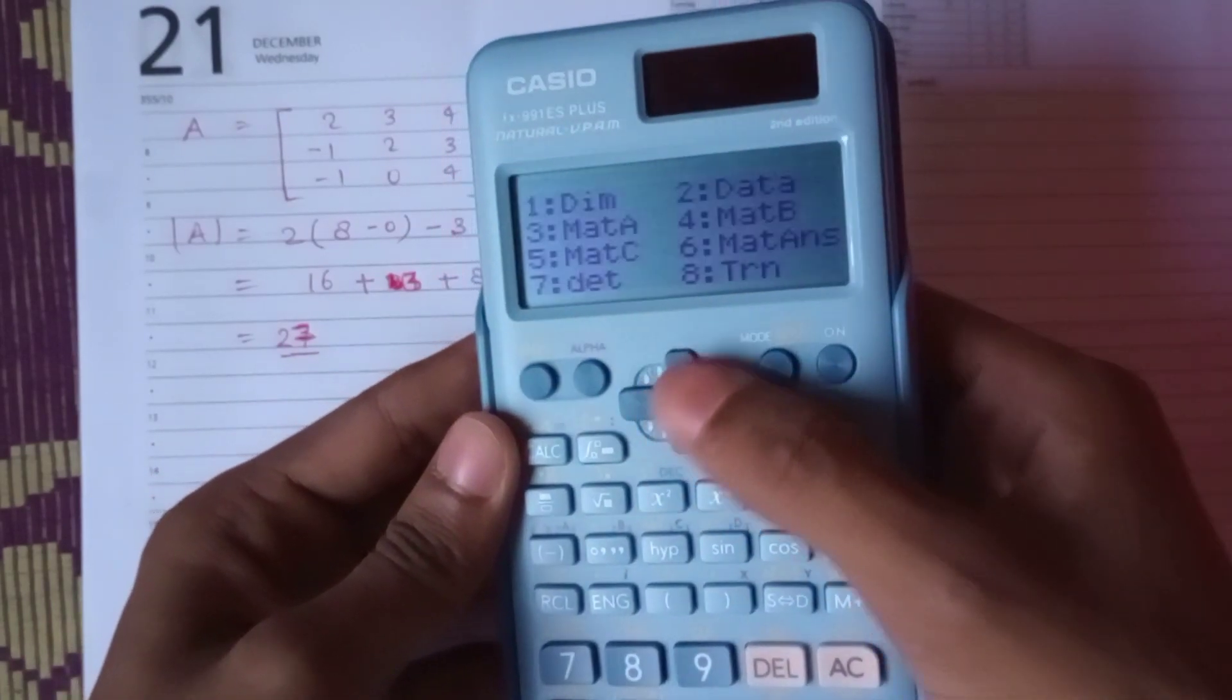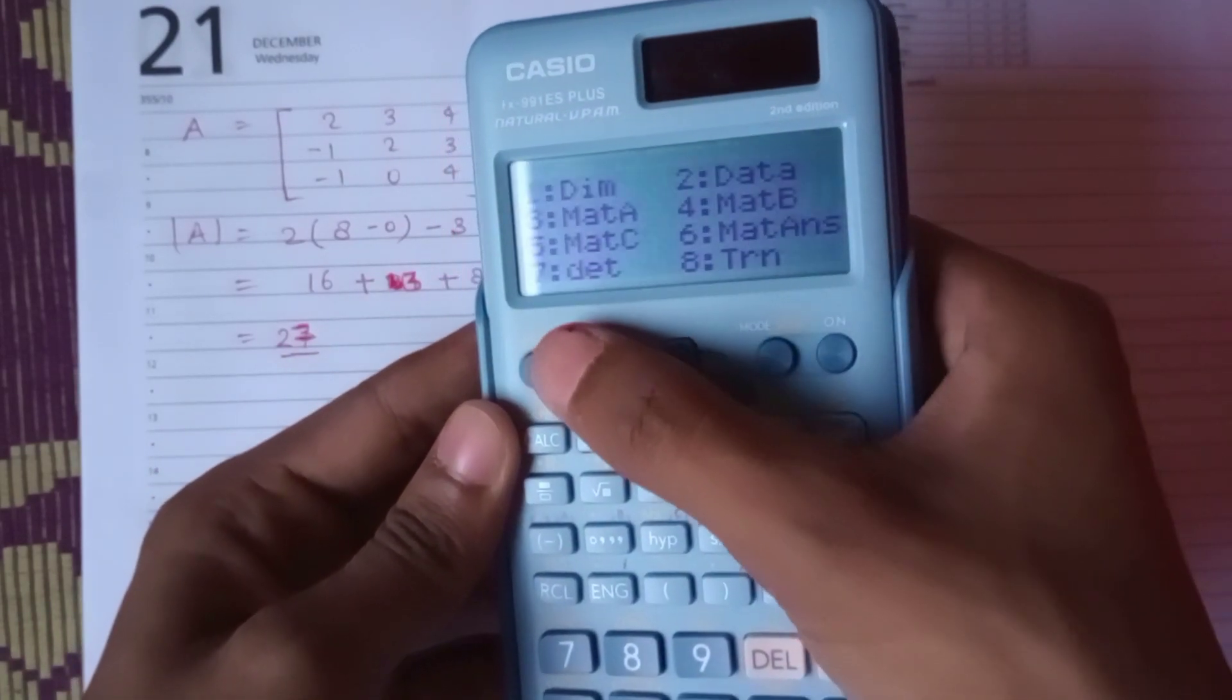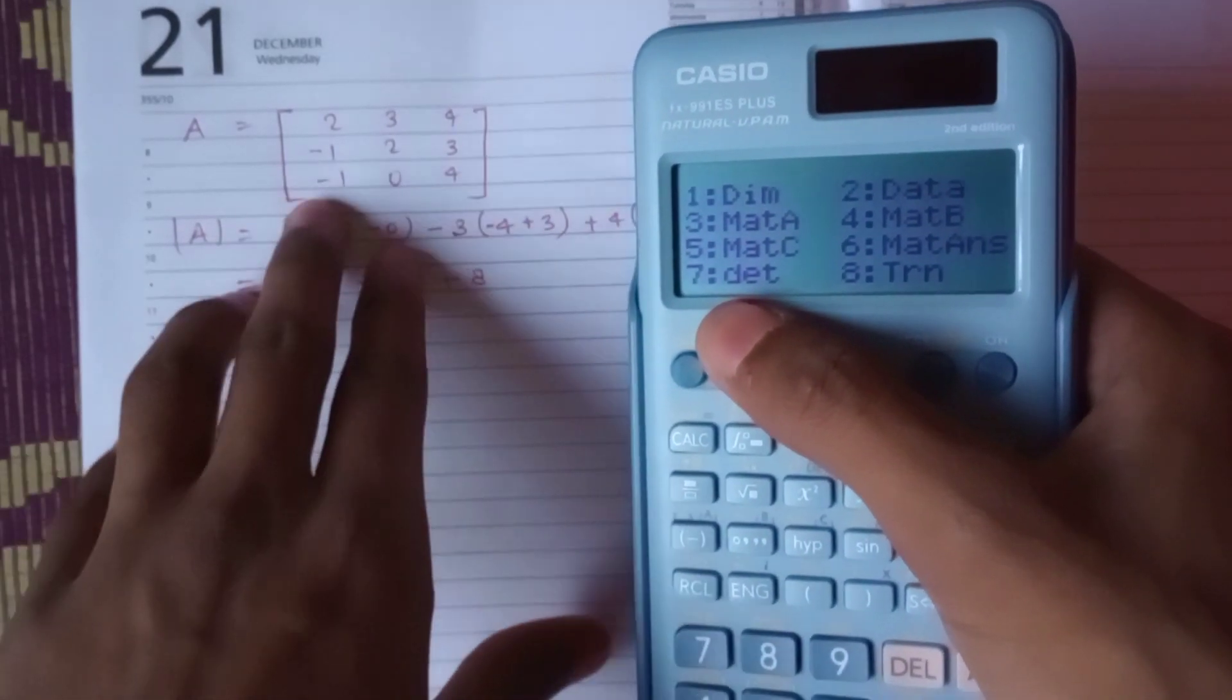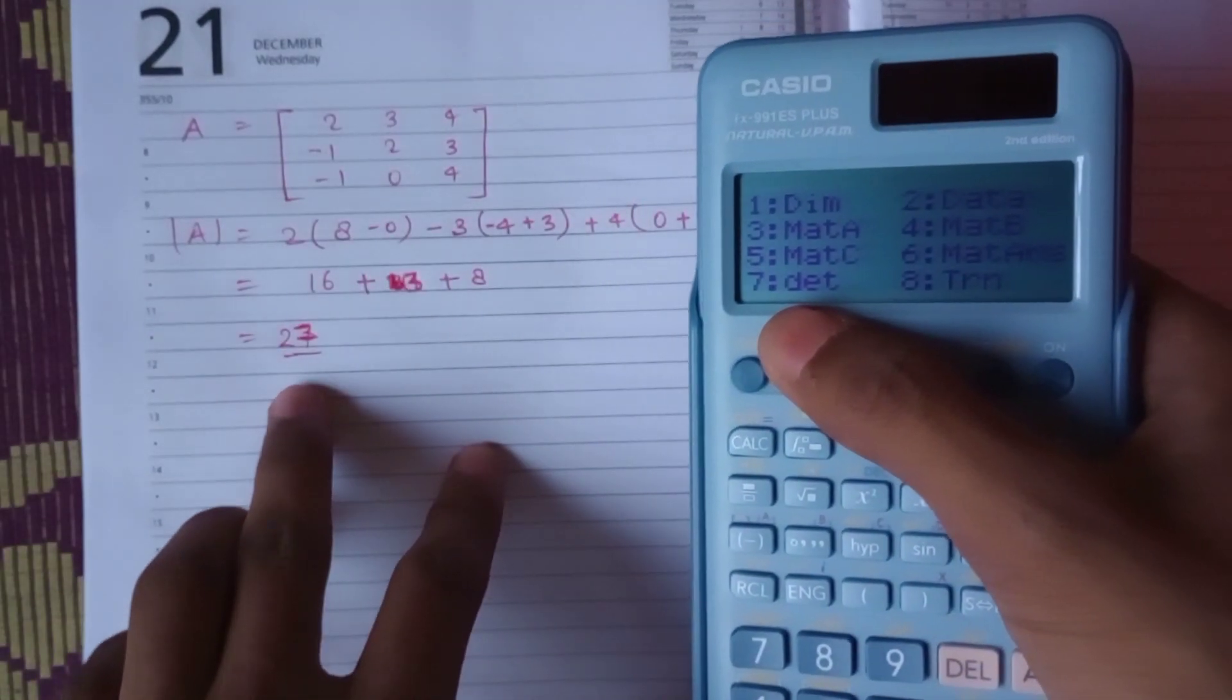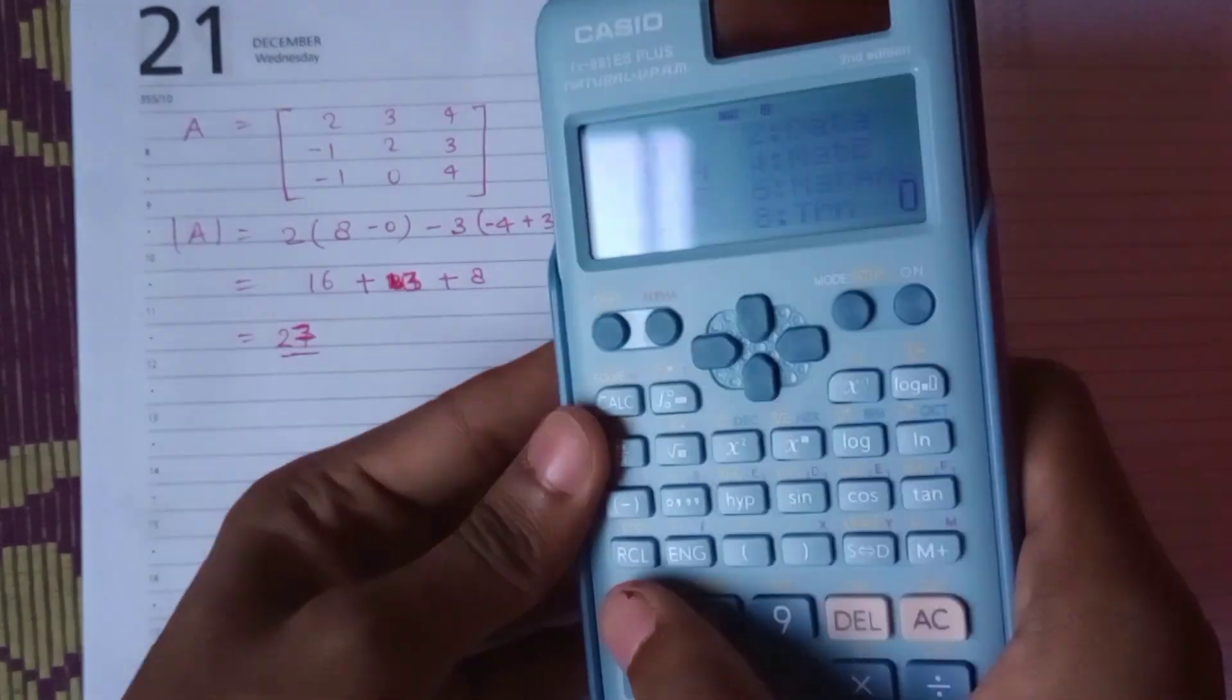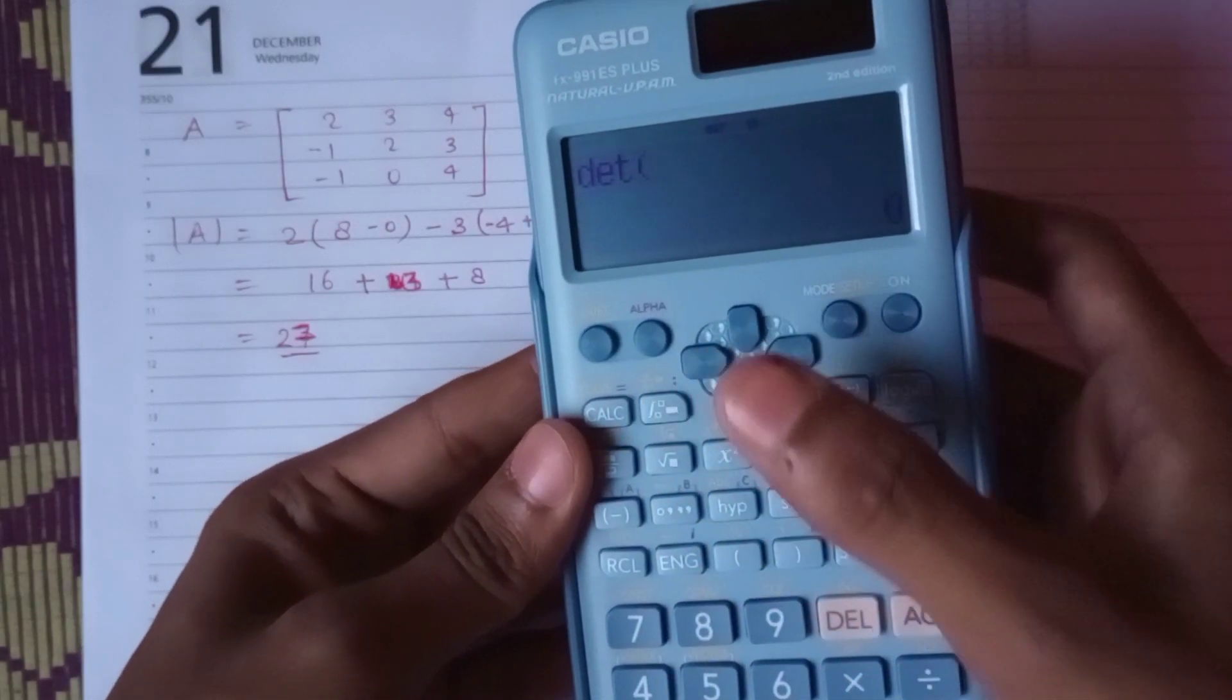Including in the calculator, we have to calculate the determinant of this matrix. In the traditional way, it is 27. So let's see what's the answer in the calculator - determinant, choose the matrix you have calculated.